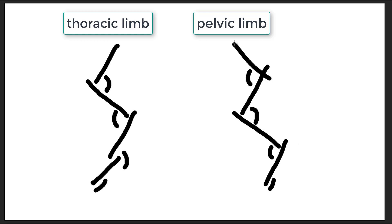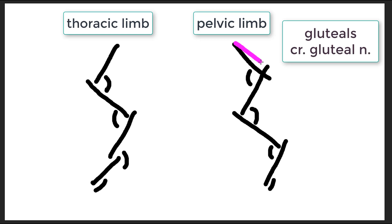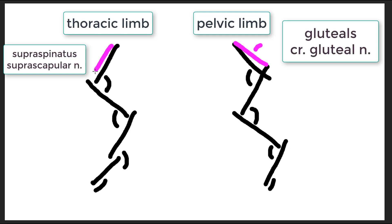Now we'll begin sketching in the muscles, starting with the gluteal muscles — specifically the middle and deep gluteal. These run from the hip bone to the greater trochanter of the femur, are innervated by the cranial gluteal nerve, and are extensors of the hip joint. The analogous muscle in the thoracic limb is the supraspinatus, which goes from the scapula to the short end of the humerus, is innervated by the suprascapular nerve, and is also an extensor — in this case of the shoulder joint.